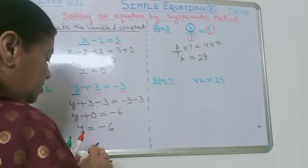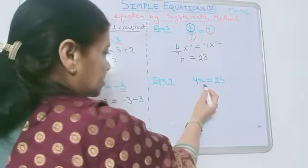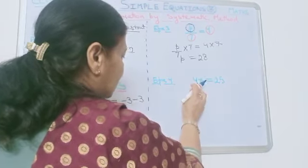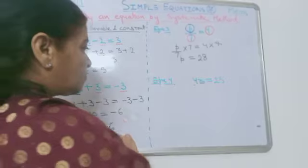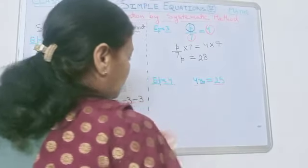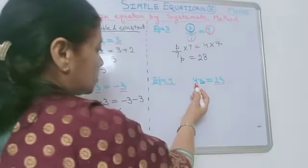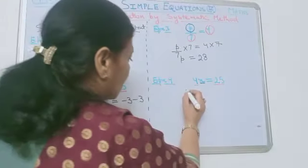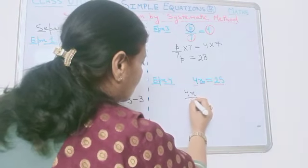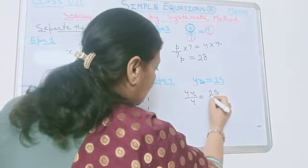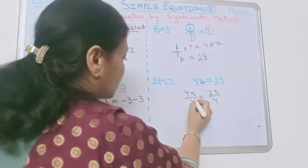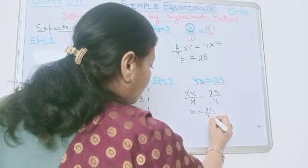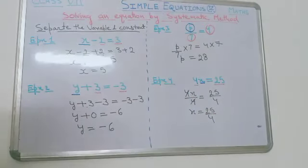Next, consider another example: 4x is equal to 25. Here, the term x is variable and the terms 4 and 25 are constant. To remove this 4 from x, we have to divide this side by 4. So divide the other side also by 4. These cancel, x is equal to 25 upon 4 is the solution of the equation.